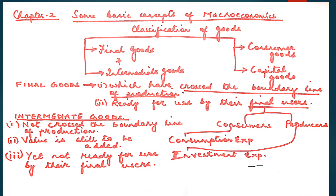For example, a farmer produces wheat and sells it to the mill owner for rupees 1000. The mill owner produces wheat flour and sells it to the baker for rupees 1500. The baker produces bread and sells it to the consumer for rupees 2000. So the final good is bread, available to the consumer for rupees 2000. It has crossed the boundary line of production and does not require any further value addition.